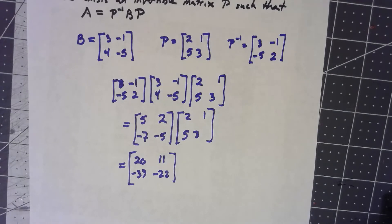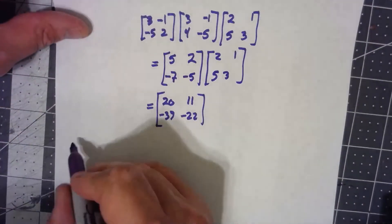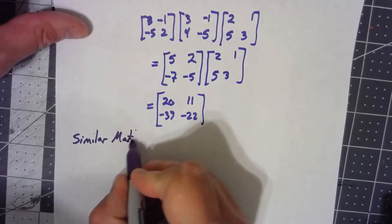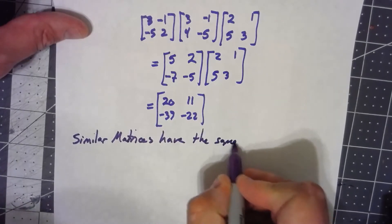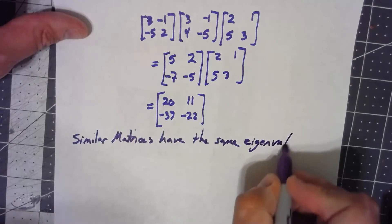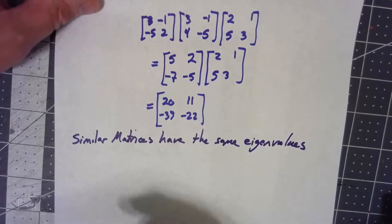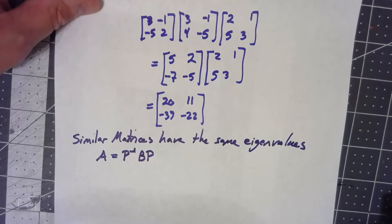Why is this important? The big thing is that similar matrices have the same eigenvalues. To see why, let's say that A is P inverse BP — these are two similar matrices.